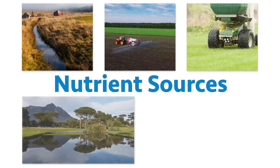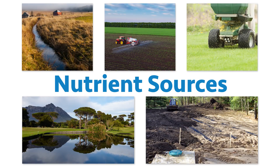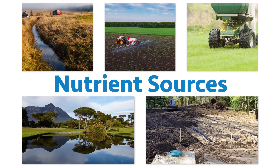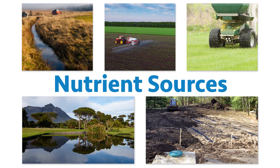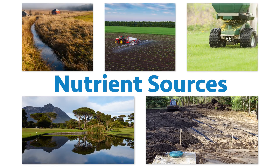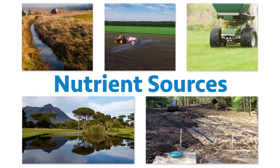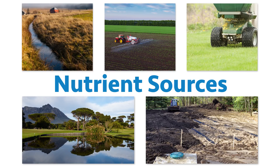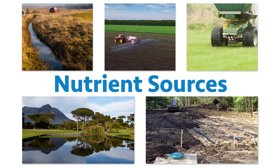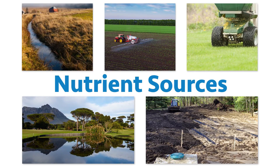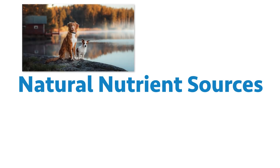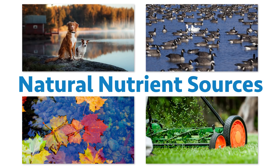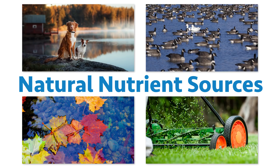Now the first topic we're going to discuss is changes in nutrients. Nutrients come from many different sources. Large flushes of nutrients may enter water bodies from fertilized fields such as golf courses, agricultural lands, or just lawns that have been fertilized — that fertilizer can run off into a water resource. But there are many natural sources of nutrients such as leaves and grass.